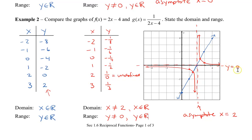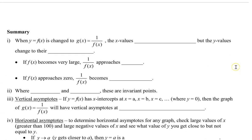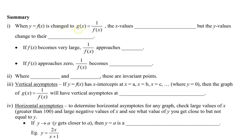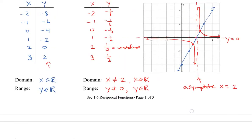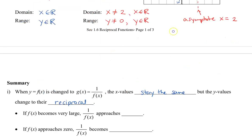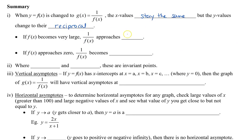Let's summarize what we can see from these two examples. When y equals f of x is changed to the reciprocal g of x equals 1 over f of x, the x values stay the same, but the y values change to their reciprocal. As f of x becomes very large, the y values for the reciprocal become very small, approaching 0.